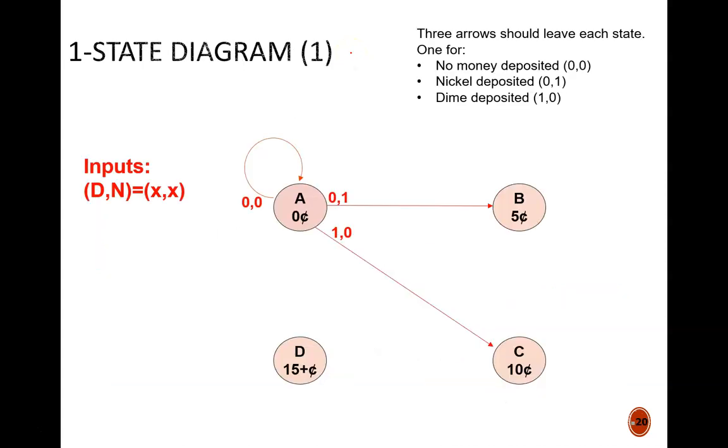With the problem statement understood, we can move on to step one of the design process. Draw the state diagram. Here, we see the beginnings of my state diagram, which identifies some important features. There are four states, one each for 0 cents, 5 cents, 10 cents, and 15 plus cents. That last state is what will make this a Moore design, rather than a Mealy design, like we saw previously.